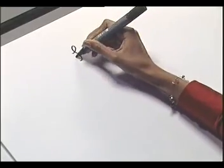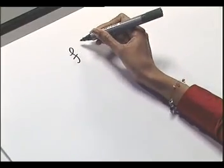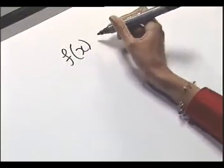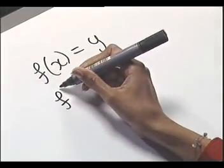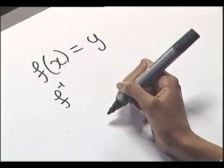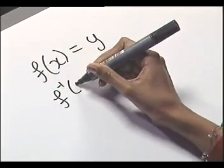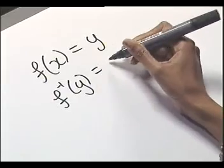In this video, we'll define the inverse of a function f. Let's suppose we have a function f that sends x to y, so f of x equals y. The inverse of f is denoted f to the minus 1, and it's the function that sends y back to x. For this to be an inverse, it needs to work for every x that f acts on.